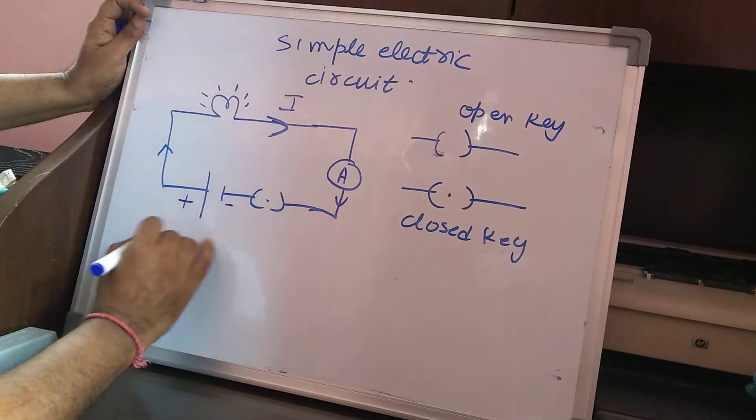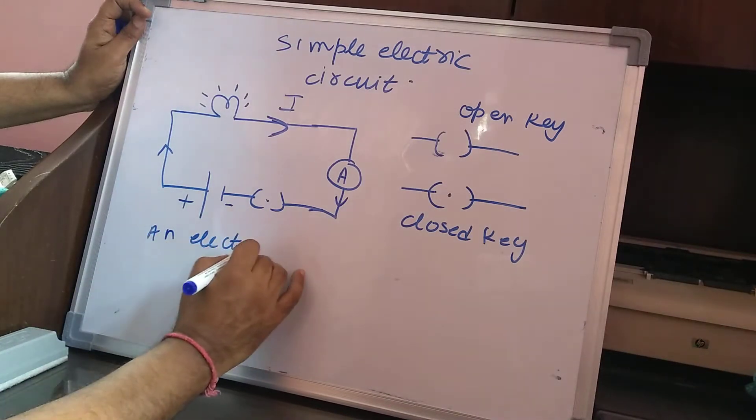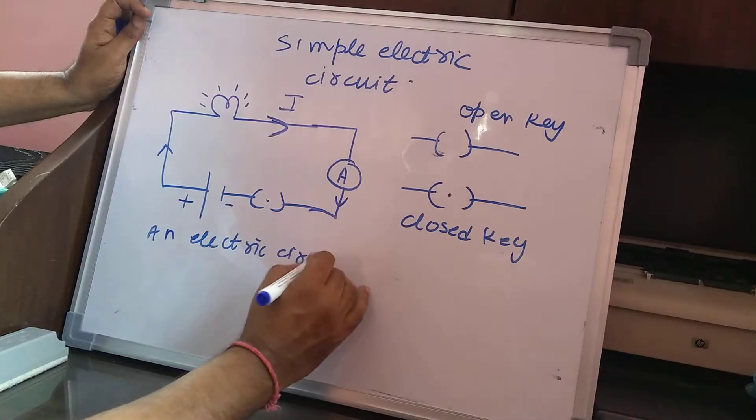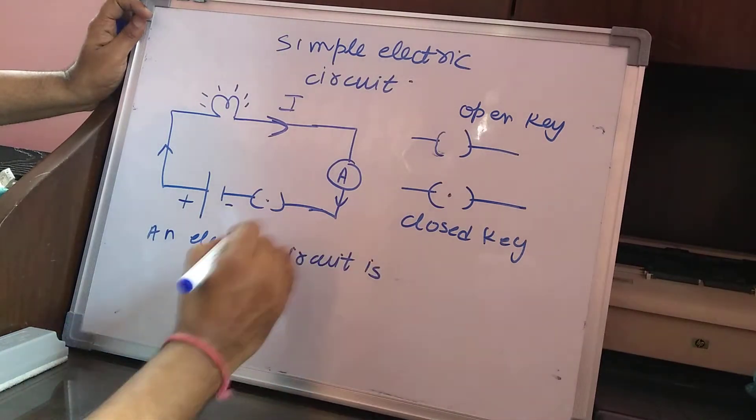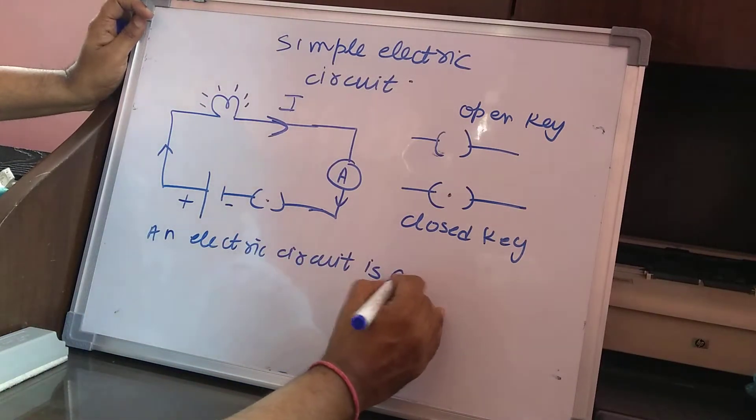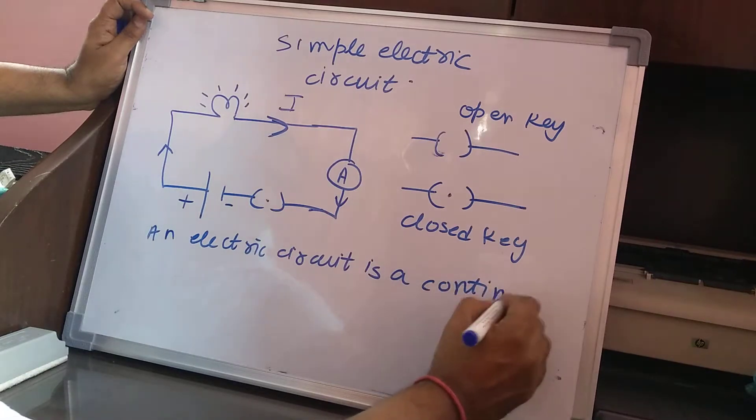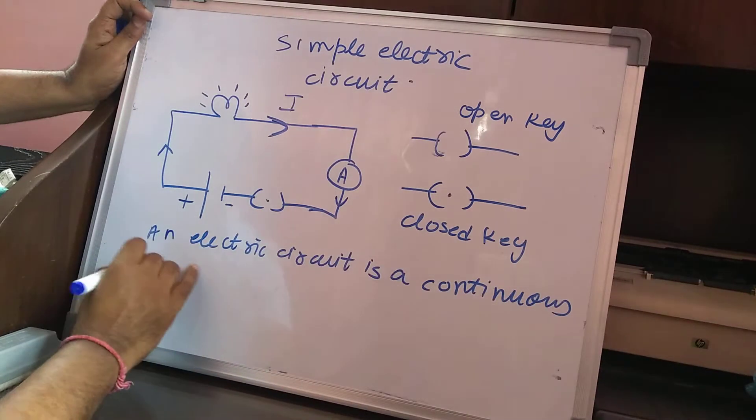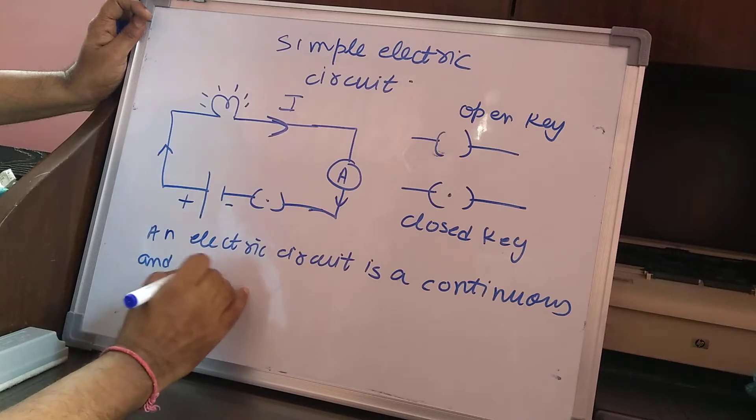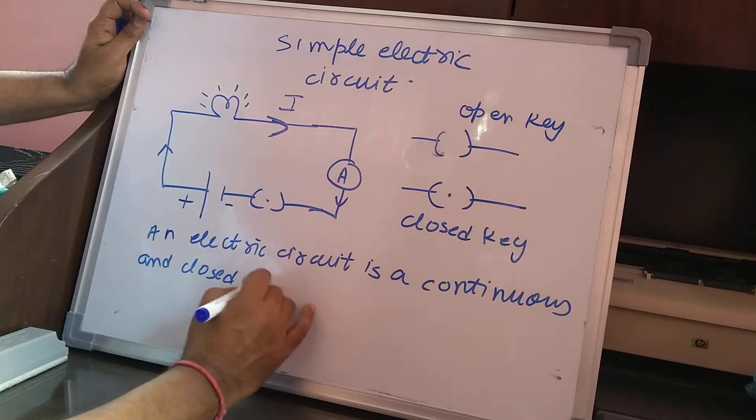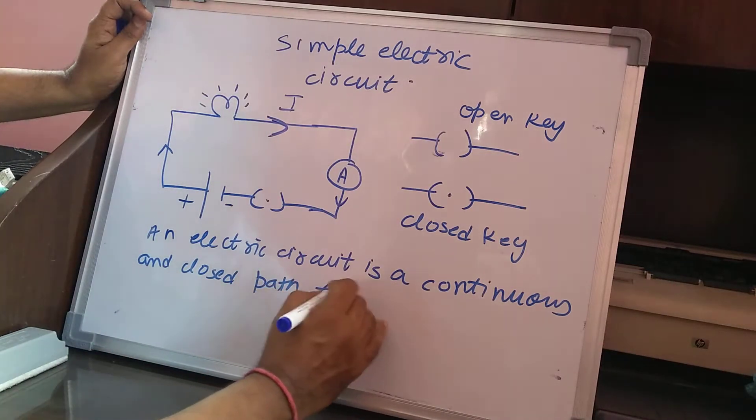An electric circuit is a continuous and closed path for electric current to flow.